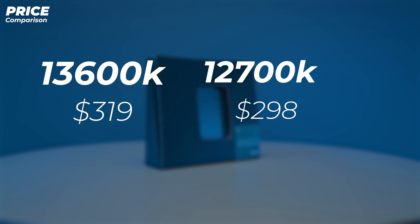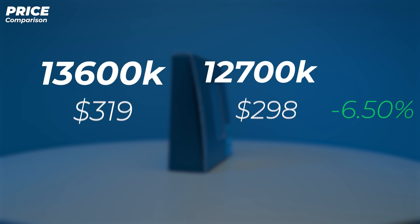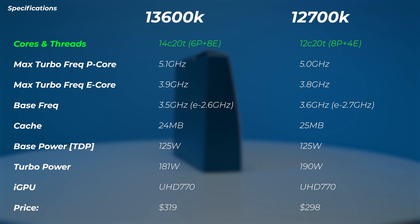The first thing is the price. I wonder what the price difference will be in your country at local shops — please comment below. But right now at the point of making this video, the i7-12700K is actually on sale at about $298 compared to $319 for the i5-13600K, making the i7 actually 6.5% cheaper.